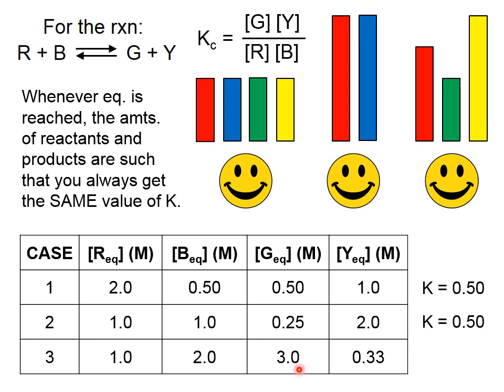And if we look at the third case, 3 times 0.33, that's the numerator. Green and yellow are in the numerator, so that's 1. And in the denominator, we have this product, which is 2. 1 divided by 2, 0.5.